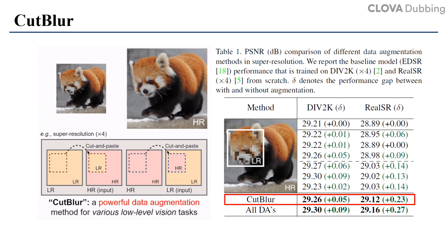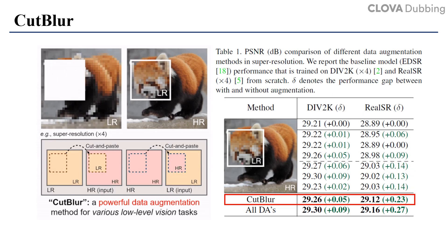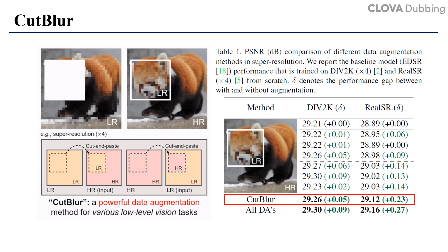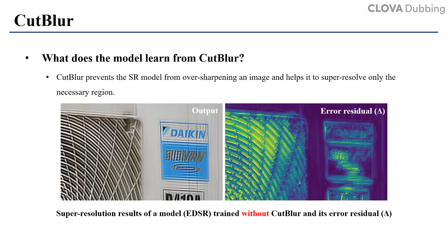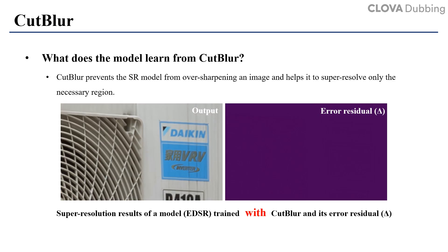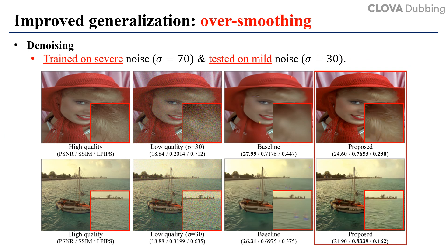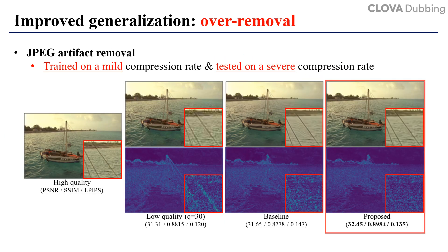Based on these observations, we propose Cut Blur. Cut Blur cuts and pastes a low-quality patch into its corresponding high-quality image, which minimizes the boundary artifact. Thanks to this unique property, Cut Blur can improve the performance and helps a model to restore only the necessary region. By doing so, Cut Blur can prevent over-sharpening, over-smoothing, and over-removal.